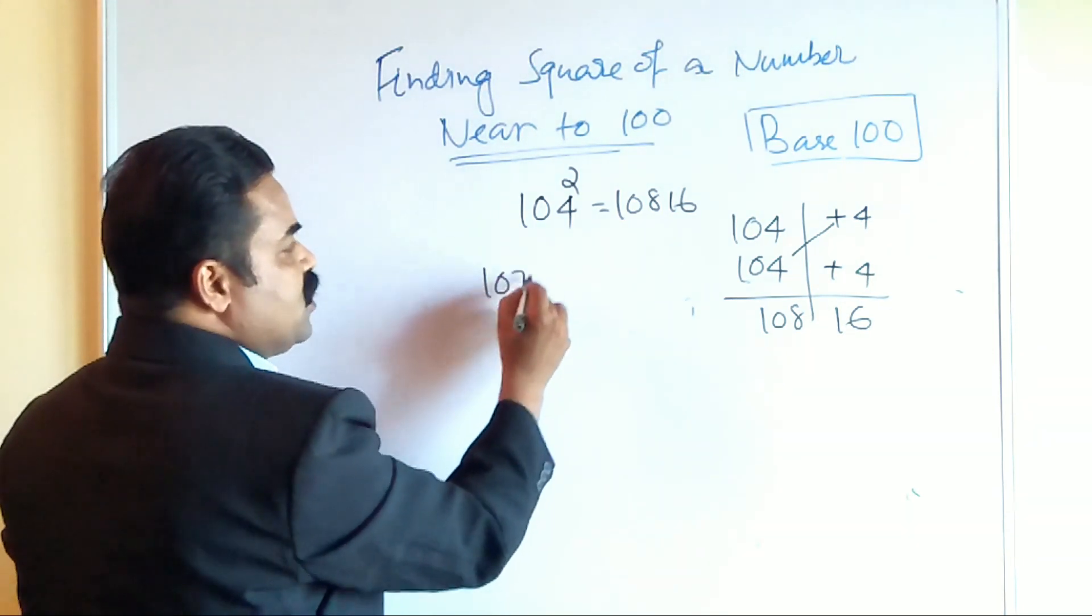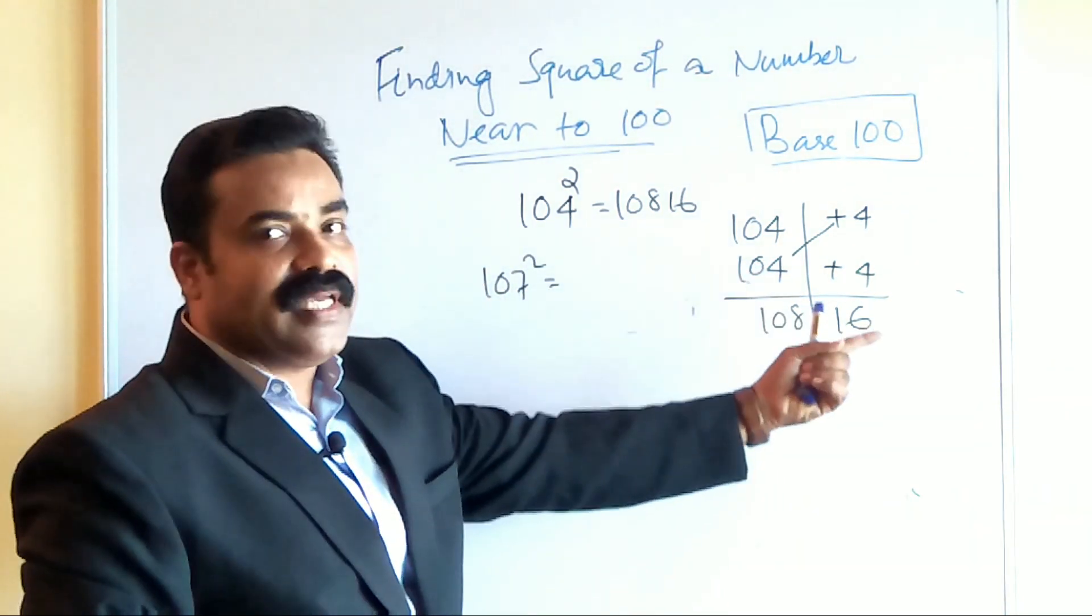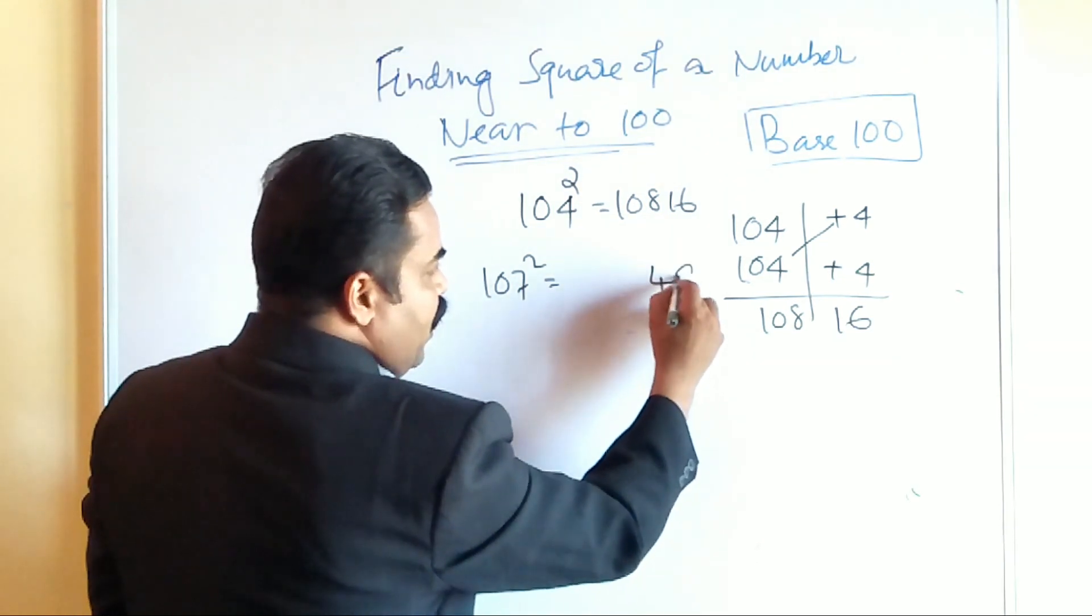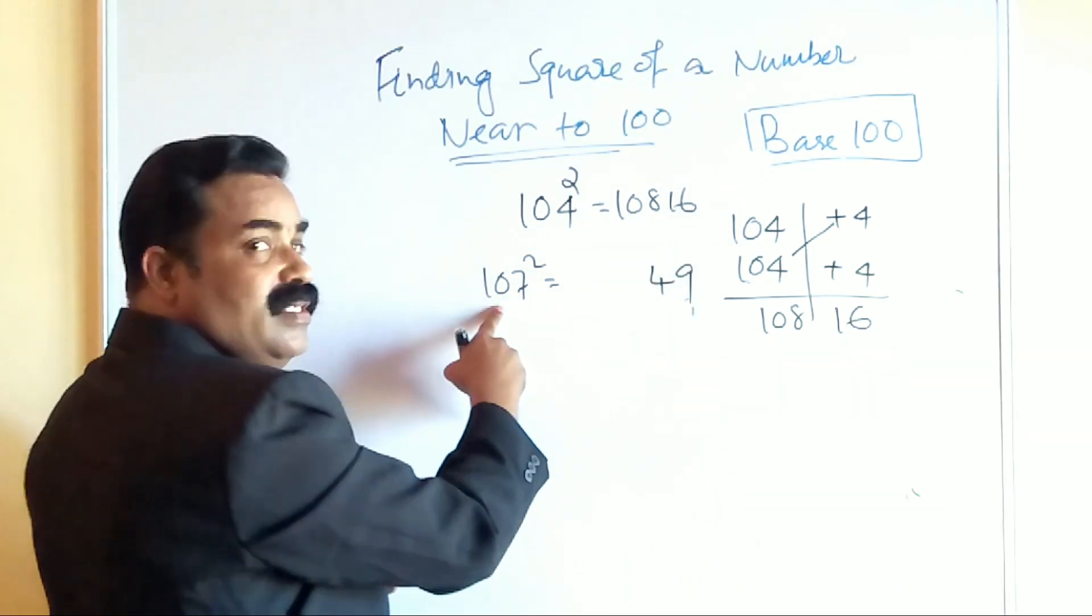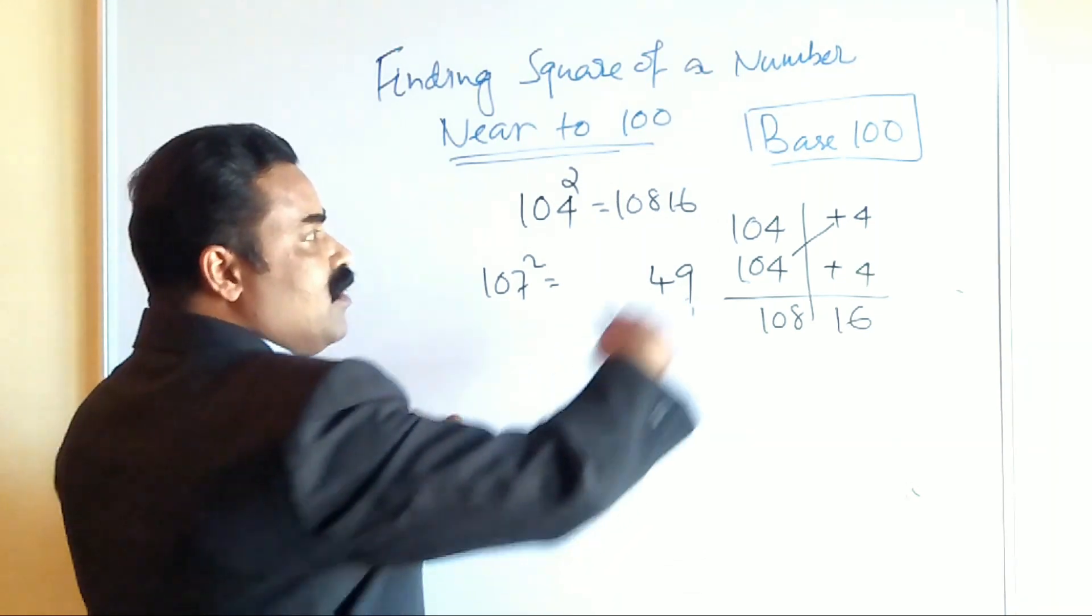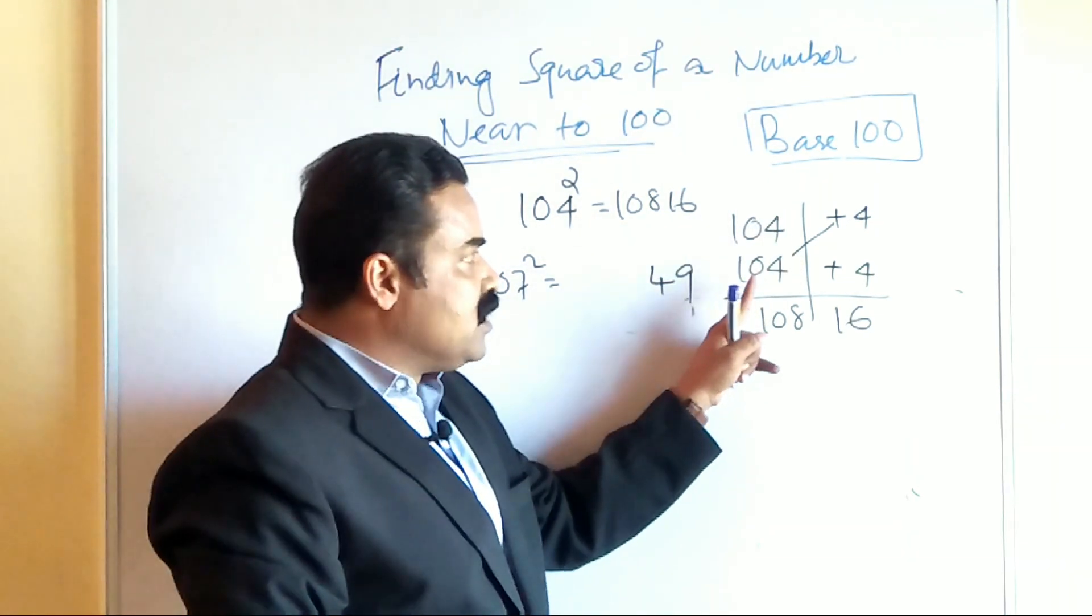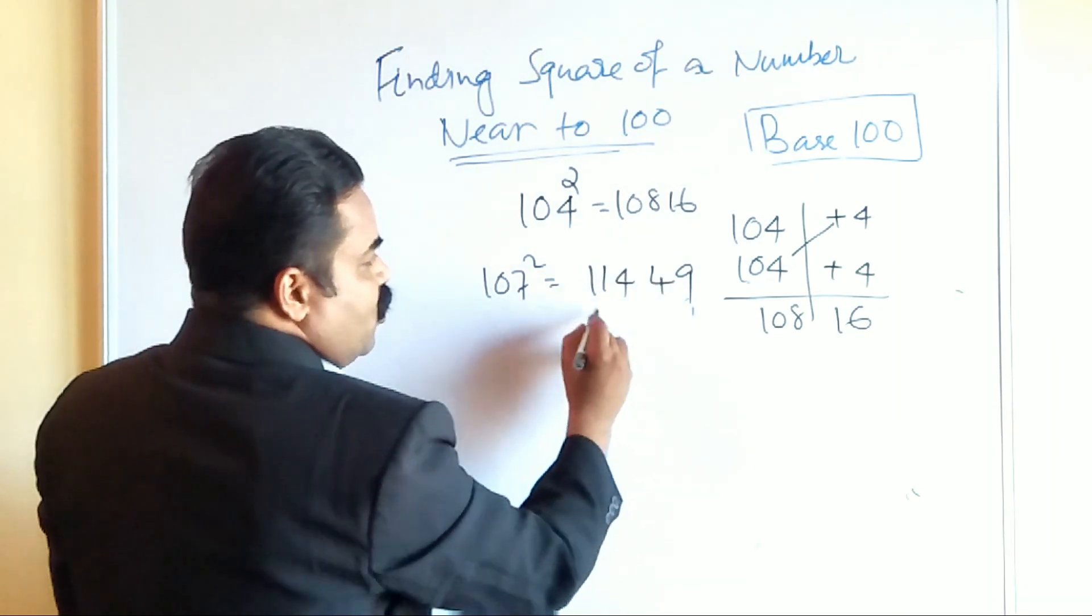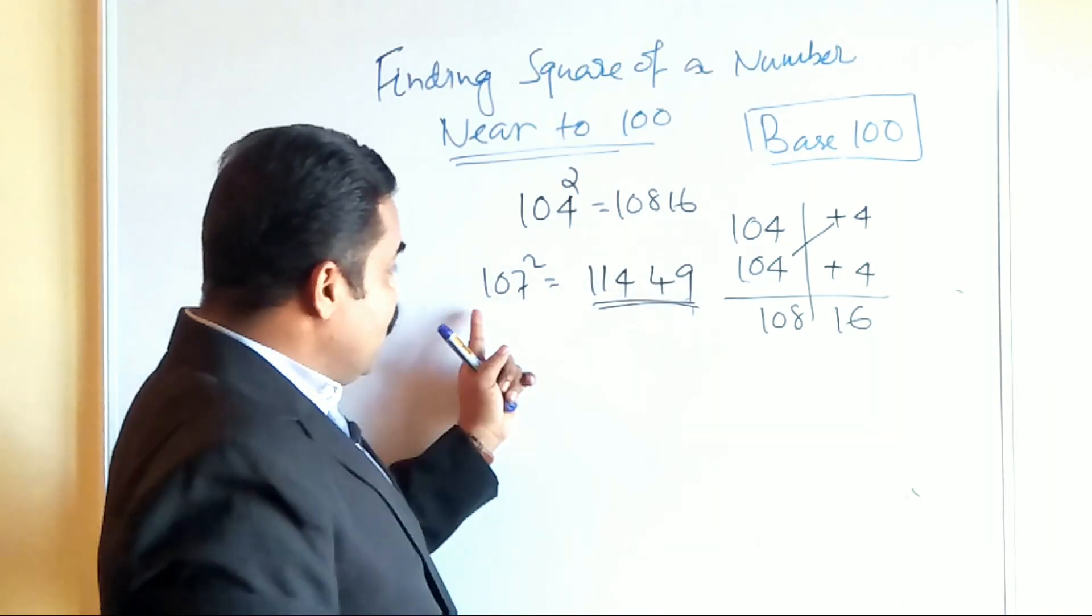Similarly I want to find out 107 square. So I can, without doing this, I can write now 107, 7 is the deviation. So 7 square will become 49, and that 7 is added with the 107. 107 and cross addition means 107 plus 7. So 107 and 7 is 114. So directly also I can write the number.